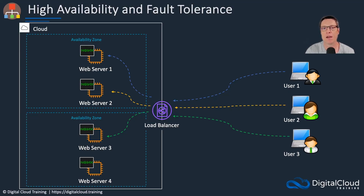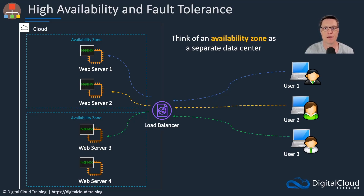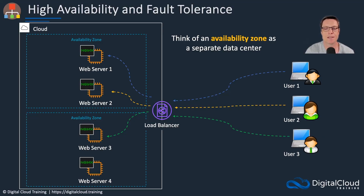Here we have a load balancer, and you can see that some users have connected to that load balancer and they've been distributed to multiple web servers across multiple availability zones. Each availability zone is essentially a separate data center — it can be more than one data center, but they are definitely separate from each other and have their own redundant power sources and redundant networking, and they're physically different buildings. So now we have lots of redundancy. If we had thousands of people connecting, they would just be load balanced across this infrastructure.